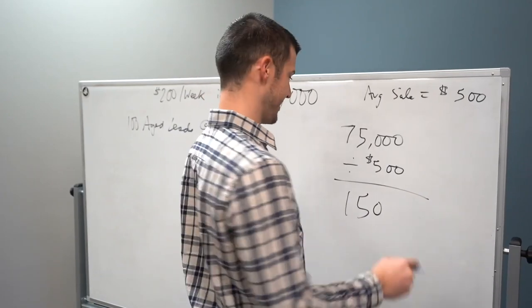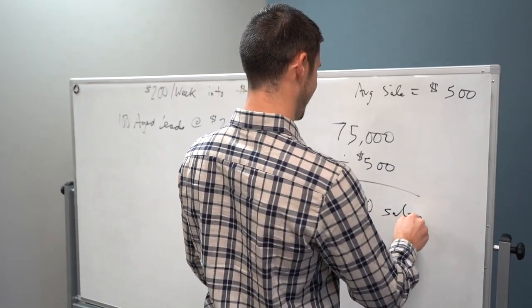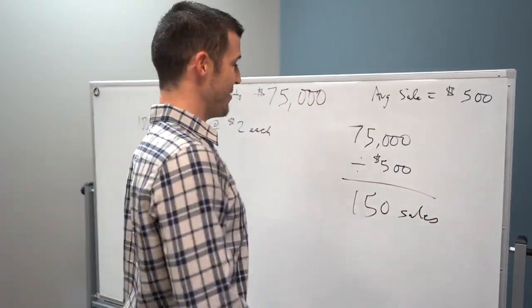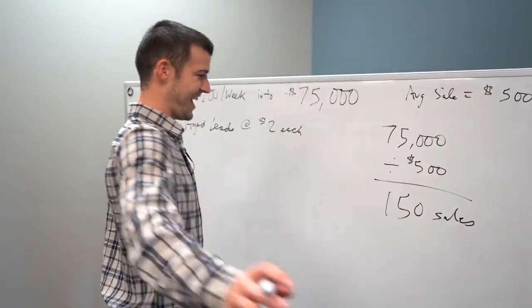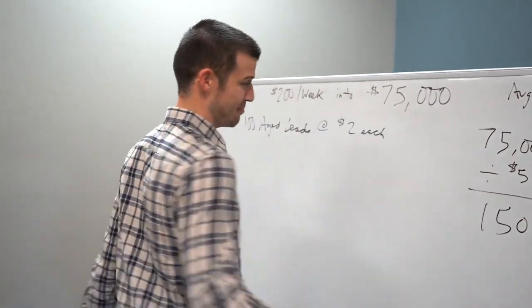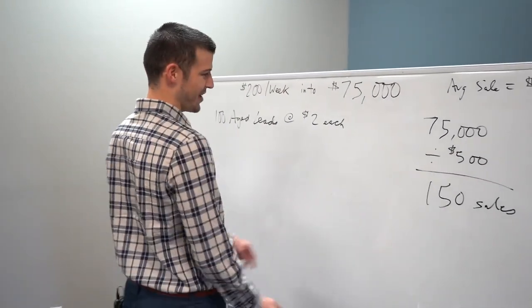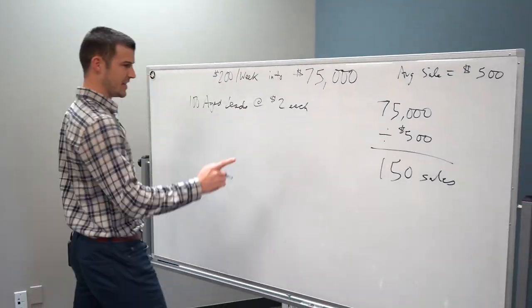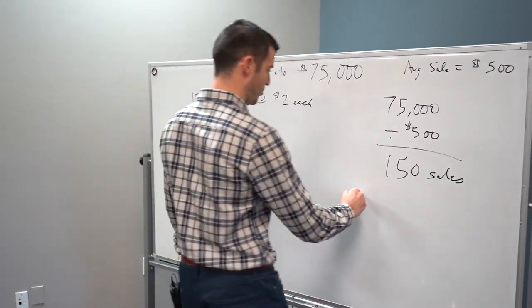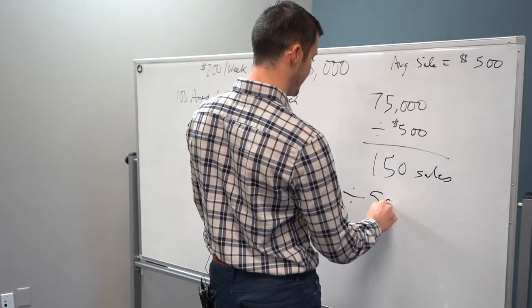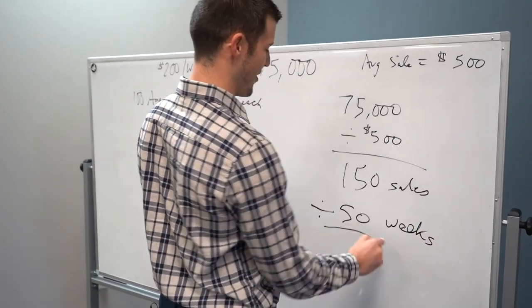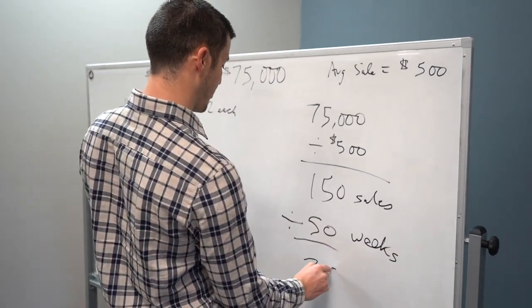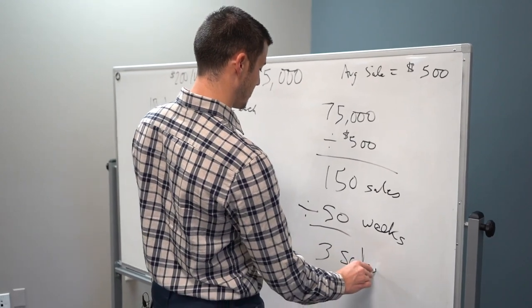You can make fun of me in the comments below. 150 sales. I'm normally really good at math, I got a lot going on today. And Dylan's laughing because that's like the first time he's ever screwed up on video with numbers. If you break that down over 50 weeks, three sales per week.